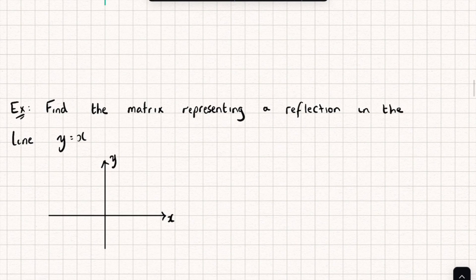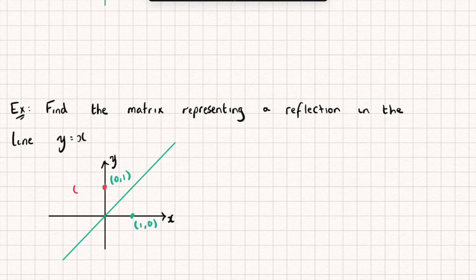Let's take a look at the next example. Here we need to find a matrix representing a reflection in the line y = x. Let's mark on our i and j unit vectors. Reflecting in the line y = x: the point (1, 0) is going to be reflected up to the point (0, 1), so the first column of my transformation matrix is (0, 1). The point (0, 1), my j unit vector, is going to be reflected to the point (1, 0), so the second column of my transformation matrix is (1, 0).